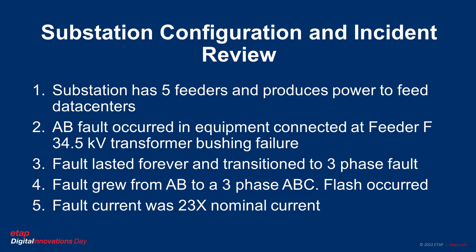Substation configuration and incident review. This substation is radial and has five feeders. The feeders produce power that is sent to several data centers. A phase-to-phase fault A-to-B occurred at a piece of equipment located in feeder F. A transformer 34.5 kV bushing incident occurred downstream in that feeder. The fault lasted forever and transitioned to a three-phase fault.